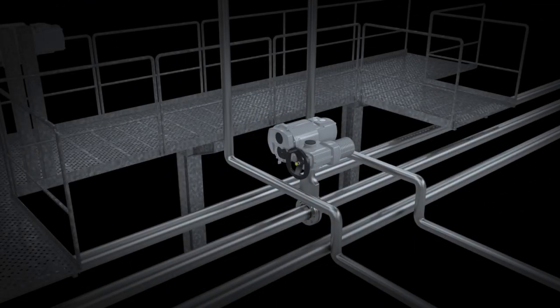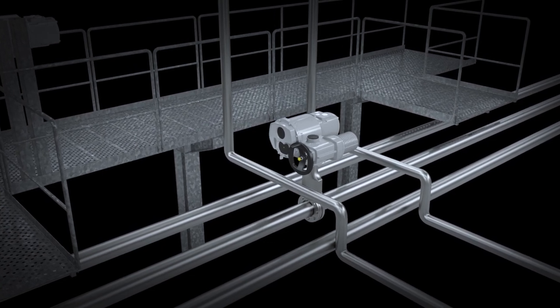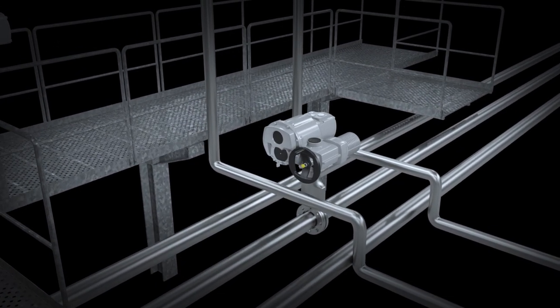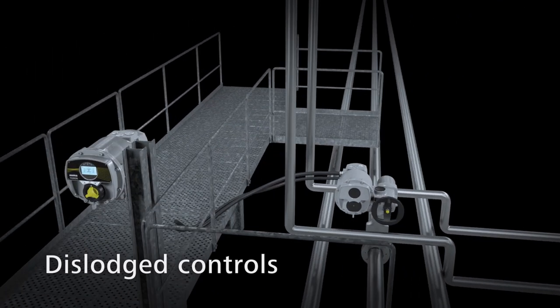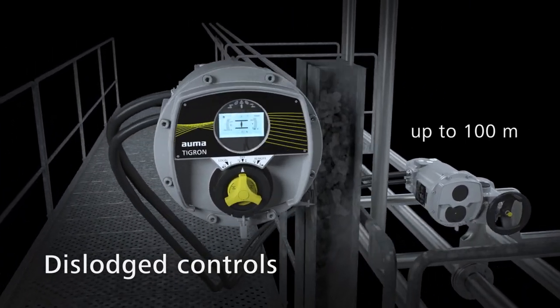The scheme of dislodged controls allows access to actuators in confined spaces. Controls are mounted separately in a known housing to facilitate actuator operation.